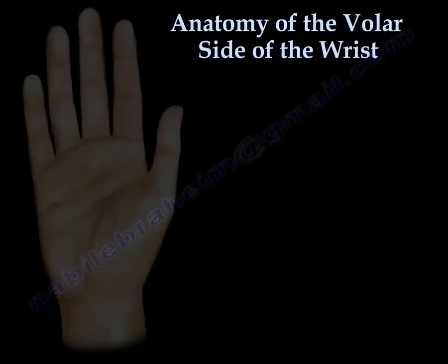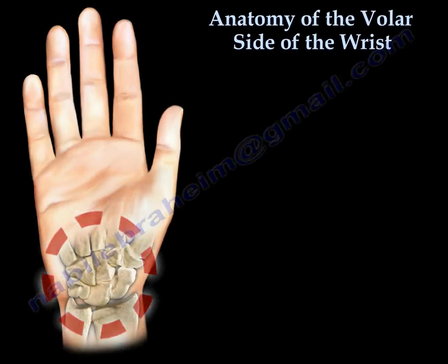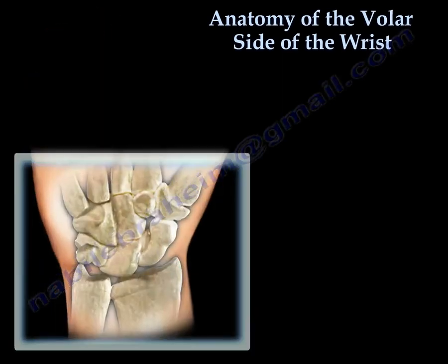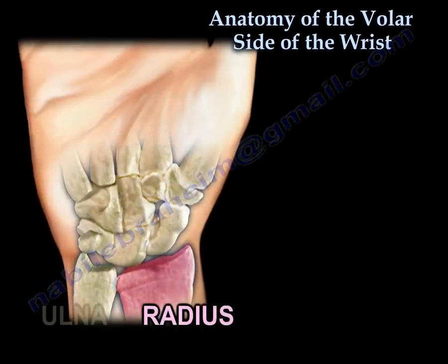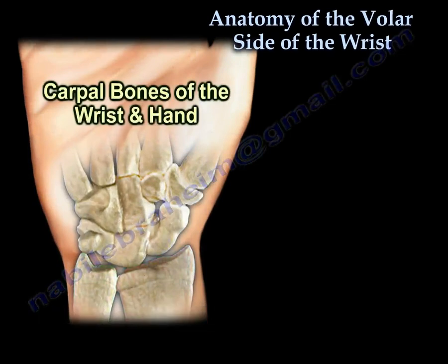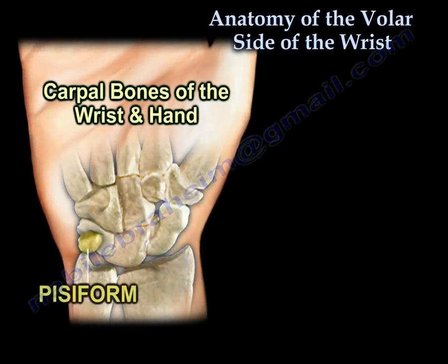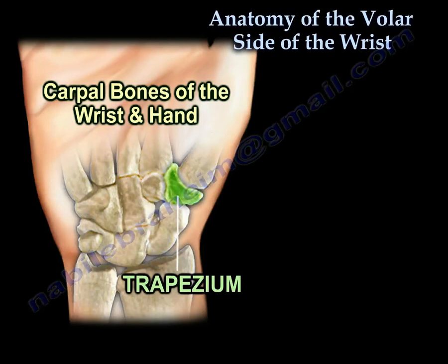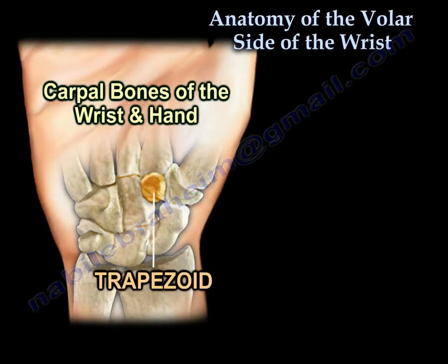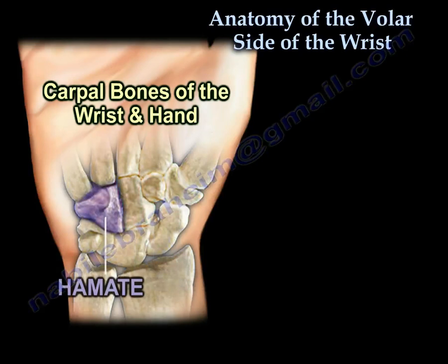Anatomy of the volar side of the wrist. We start with the bones: here is the radius and the ulna. The carpal bones are the scaphoid, lunate, triquetrum, pisiform, trapezium, trapezoid, capitate, and hamate.